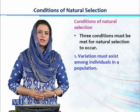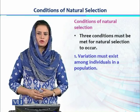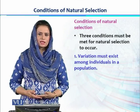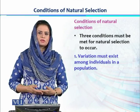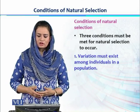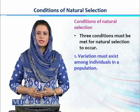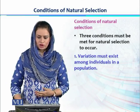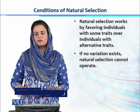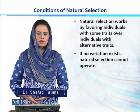The number one condition is variations. We know from Darwin's theory that variation is the main ingredient or component of natural selection. Variations must exist among the individuals in one population. Natural selection works because of the presence of different variations in the same trait.